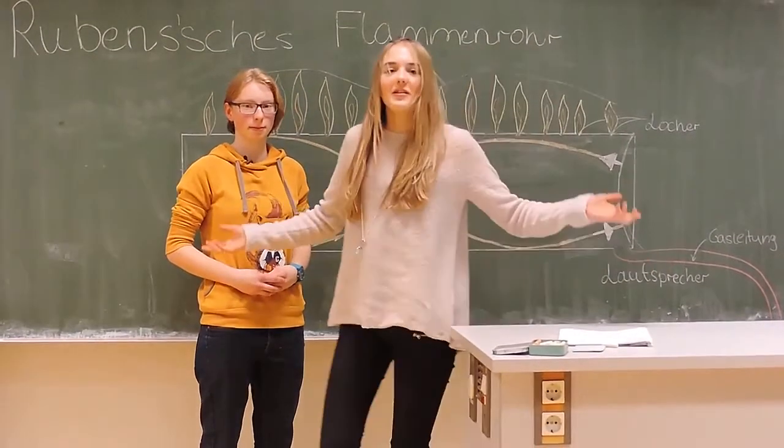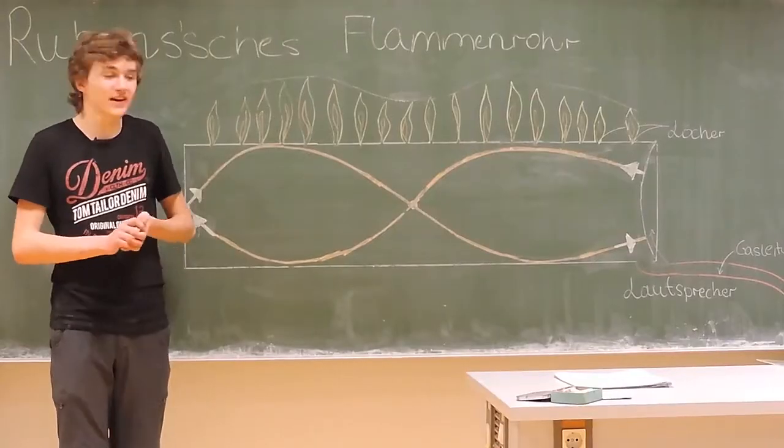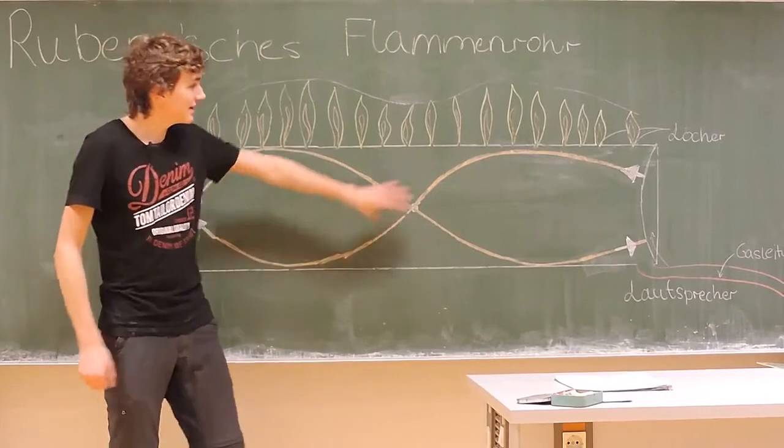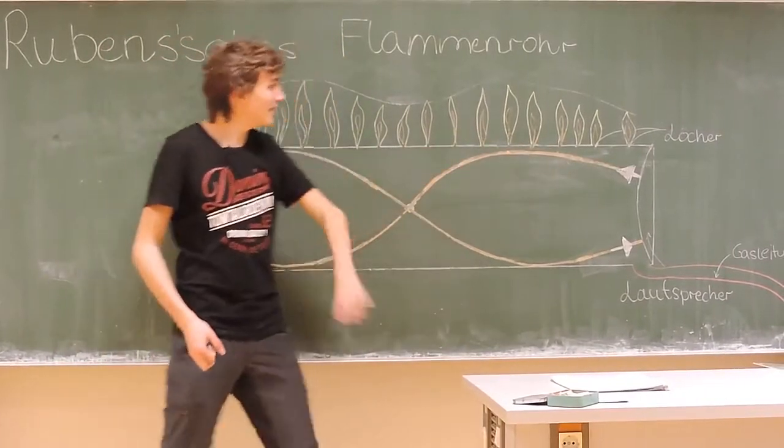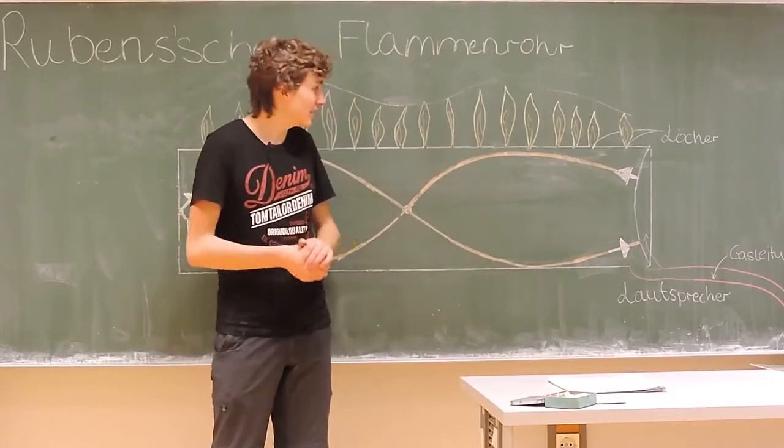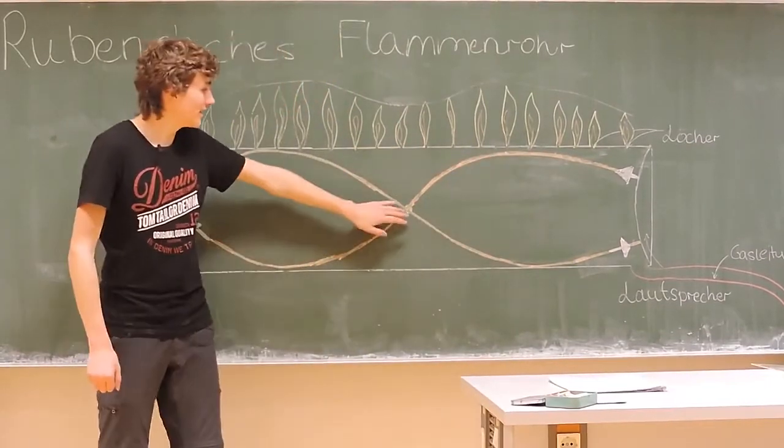What is a standing wave? A wave has antinodes, which are the bellies, and nodes, which are the knots.